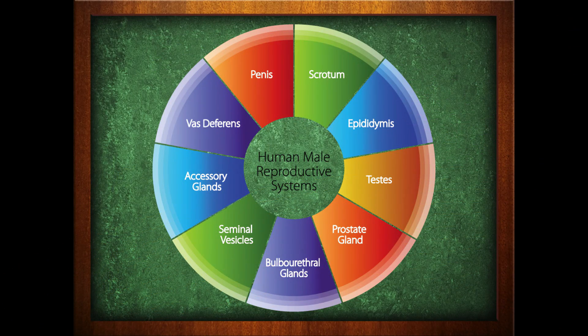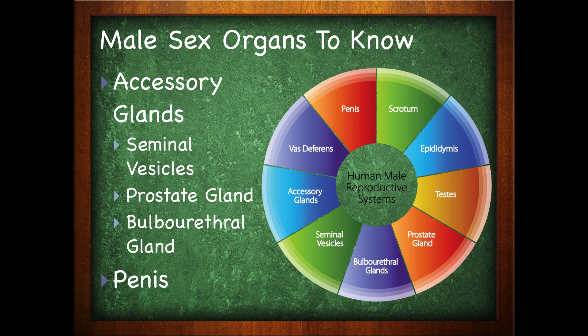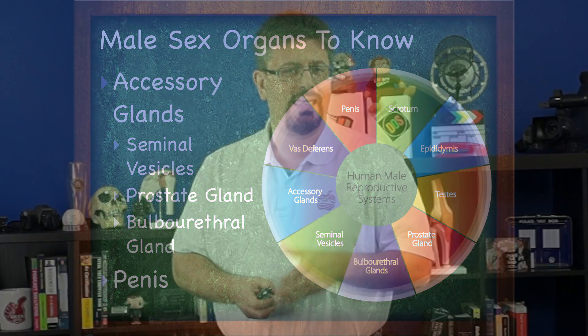Let's take a look at the male sex organs you'll need to know for this series. We're going to cover all of these in more detail: the scrotum, the testes, the epididymis, the vas deferens, accessory glands, the seminal vesicles, the prostate gland, the bulbourethral gland, and the penis. In the next video, we're going to start looking at these organs in more detail, beginning with the testes and the spermatic ducts.